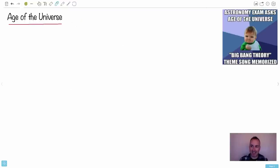Turns out we can find the age of the universe. I love this astronomy exam, ask the age of the universe, Big Bang Theory theme song memorized. Remember that? The whole universe is in a hot, dense state that nearly 14 billion years ago. So there it is, 13.7. Let's figure out, how do we know the age of the universe? This seems really cheap, but this is a way to do it. You can say, well, velocity is distance over time, isn't it?